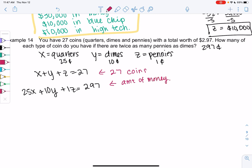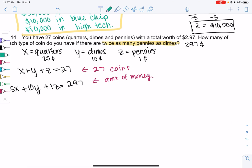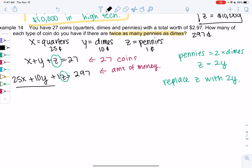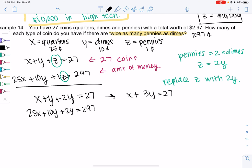And then it looks like there's one more piece of information. How many of each type of coin do you have if there's twice as many pennies as dimes? So pennies equals 2 times dimes. So that tells me that Z equals 2Y. I'm going to do similar to last time. Rather than trying to do triangular form, I already know Z is 2Y, so I'm just going to replace all the Z's with 2Y. I think it'll be easier to have a system of two equations rather than three. So X plus Y plus 2Y equals 27, or X plus 3Y equals 27. And then 25X plus 10Y plus 2Y equals 297. So 25X plus 12Y equals 297.